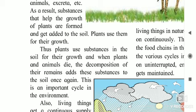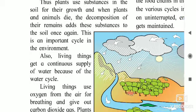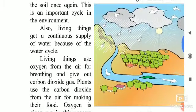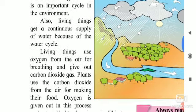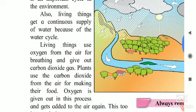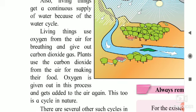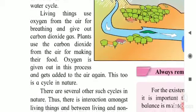In the environment, living things get a continuous supply of water because of the water cycle. Living things use oxygen from the air for breathing and give out carbon dioxide gas. Plants use the carbon dioxide from the air for making their food, and oxygen is given out in this process and gets added to the air again. This too is a cycle in nature.